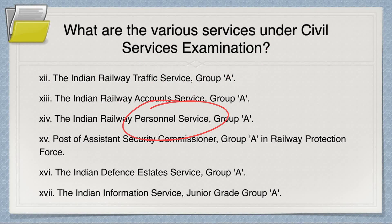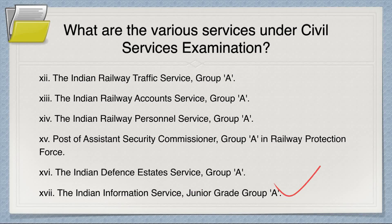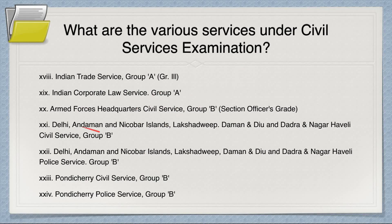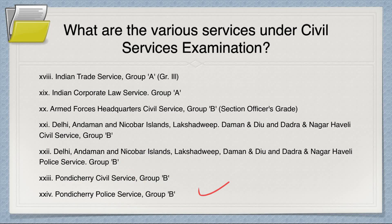Indian Railway Accounts Service (IRAS), Indian Railway Personnel Service (IRPS), and the post of Assistant Security Commissioner in Group A of Railway Protection Force are also included. Then there is Indian Defence Estate Service (Group A), Indian Information Service which is a recently introduced Junior Grade Group A service, Indian Trade Services (Group A), and Indian Corporate Law Services. Armed Forces Headquarters Civil Services is Group B. The AGMUT cadre covers Andaman & Nicobar, Lakshadweep, Daman & Diu, and Dadra & Nagar Haveli — just like state PCS for those territories. Their police service is called DANIPS. Pondicherry Civil Services and Pondicherry Police Services are Group B — state services managed by UPSC since they don't have their own state PSC.